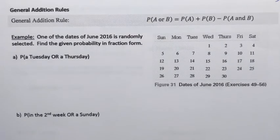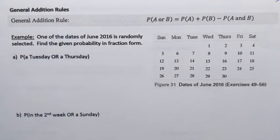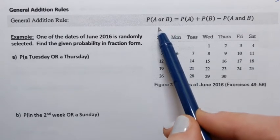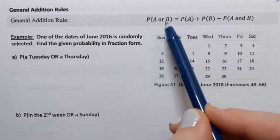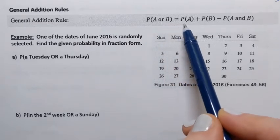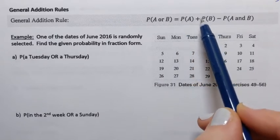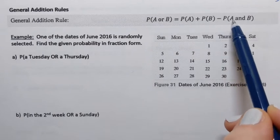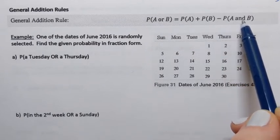In this example, we're going to demonstrate how to compute probabilities using the general addition rule. According to this rule, if we want to compute the probability that one or another event occurs, we have to find the probability of the first event, add the probability of the second event, and subtract the probability of A and B — that's both events happening at the same time.